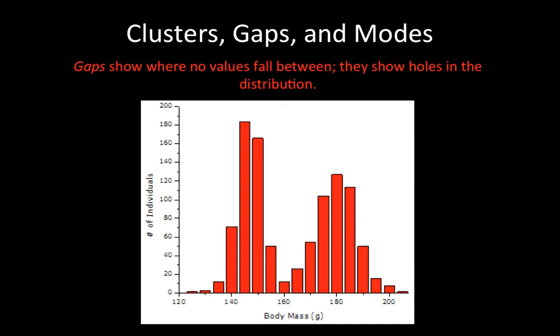This graph does not display a gap between the two clusters, but there is a trough, or a valley, in between them. Simply saying that the mean of the distribution is 160 and that it ranges from 125 to 205 completely misses the fact that there are two distinct clusters.